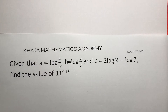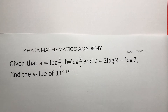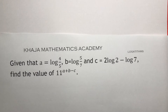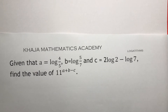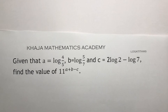Here is an important problem from logarithm. A value is log(4/5), B is log(5/7), C is 2log2 minus log7. We need to find the value of 11 to the power of (a + b - c).